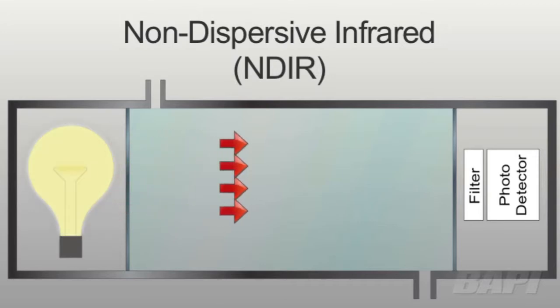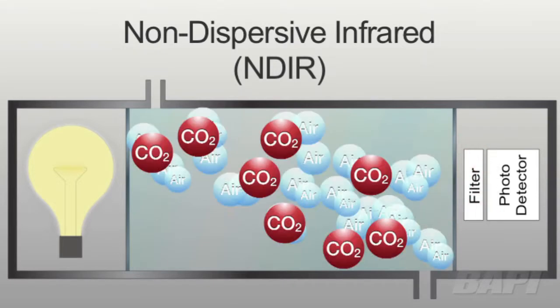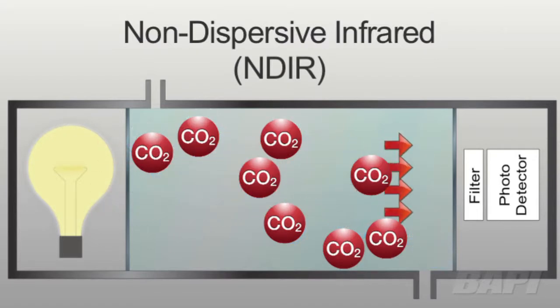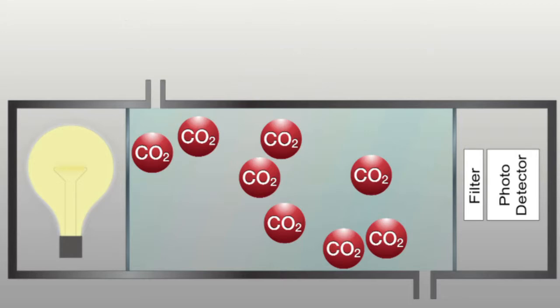An NDIR sensor shines infrared light through air in a sample chamber to a photo detector on the other side. CO2 molecules are opaque to 4.26 micron infrared light while the rest of the air molecules are not. So the intensity of the infrared light is diminished proportionally to the number of CO2 molecules in the sample chamber. Measuring the resultant light intensity measures the number of CO2 molecules present.